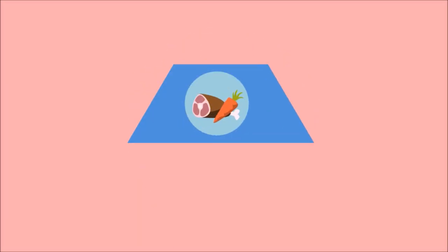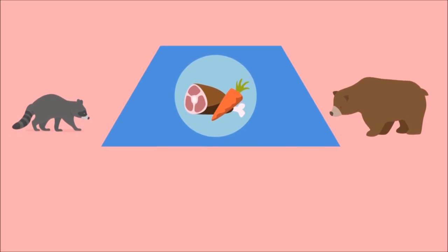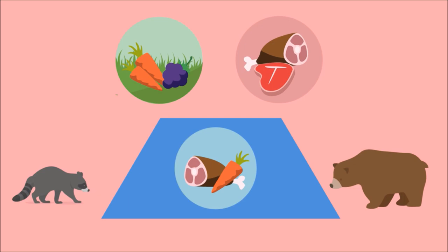Which trophic level do you think has the most direct interaction with other trophic levels? Pause the video and have a think. If you said the intermediate trophic level, or the one that contains omnivores, you're right! Omnivores tend to eat a much wider variety of organisms than either of the other two trophic levels. This variety in their diets leads to them having more direct interactions than other trophic levels.